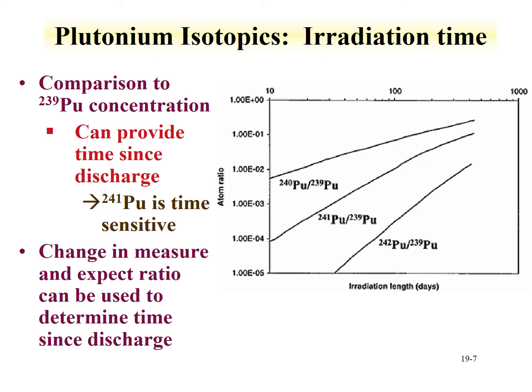Plutonium-241 is time-sensitive, since it has a relatively short half-life. It can also provide information about the time since discharge. This could be a key measurement, as it's very sensitive to the length of irradiation. Plus, it will provide information based upon the decay of plutonium-241 to americium-241—you can use that as a dating-type signature for how long the material has been outside of the reactor.